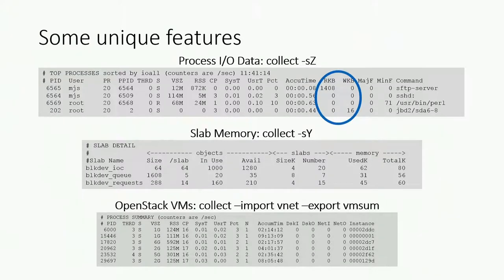The other thing Collectl will let you do is look at slab memory. I don't know how many people ever find the need to look at slab memory, but there have been cases where generally you might have a couple dozen megabytes tied up in slab. Sometimes you look at your slab memory and you see you've got five gigabytes — holy crap, who's using up all my slab memory? Collectl can tell you in a nicely formatted way which types of data structures are tying up your slab, making it real quick to find the answer.